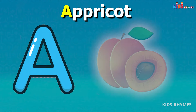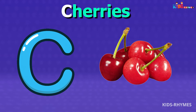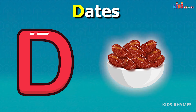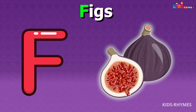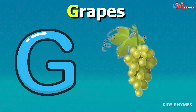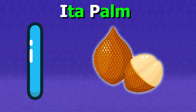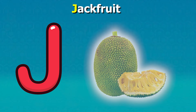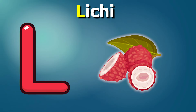A for Apricots, B for Bananas, C for Cherries, D for Dates, E for Elderberries, F for Figs, G for Grapes, H for Honeydew, I for Indian Plum, J for Jackfruit, K for Kiwis, L for Lychees.